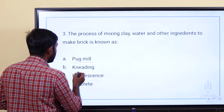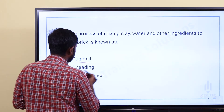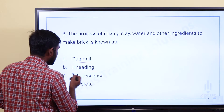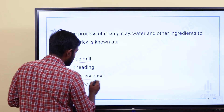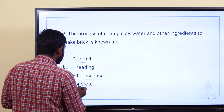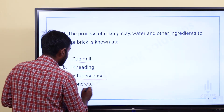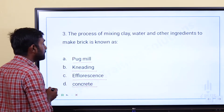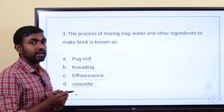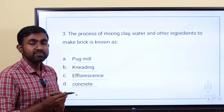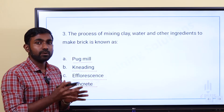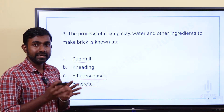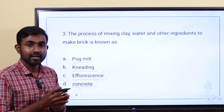The process of mixing clay, water, and other ingredients to make brick is known as — Option B: Kneading, Option C: Efflorescence, Option D: Concrete. The answer is Option B — Kneading. Kneading is a process of mixing clay, water, and other ingredients.